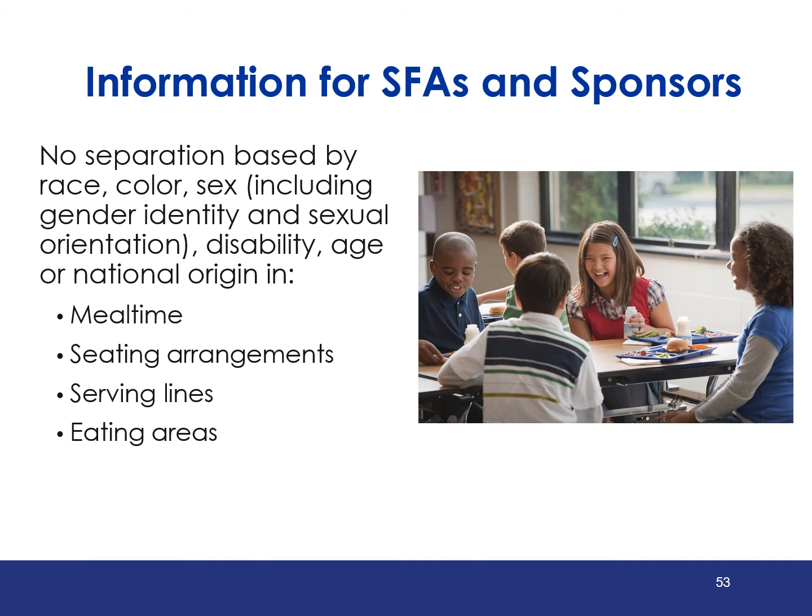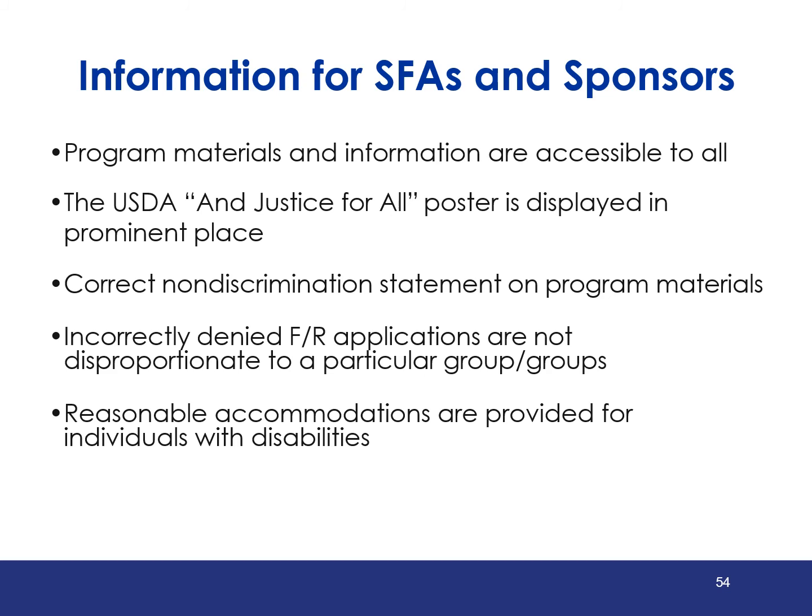Compliance reviews are meant to ensure that there is no separation in meal time, seating arrangements, serving lines, and eating areas on the basis of the six protected classes. Additionally, while compliance reviews are not limited to the following, these reviews seek to ensure that program information and materials are accessible to all, that the And Justice for All poster is displayed in a prominent location, that correct use of the non-discrimination statement is being implemented, appropriate collection of race and ethnic data, that incorrectly denied meal benefit applications are not disproportionate to a particular group, and that reasonable modifications are made for individuals with disabilities.